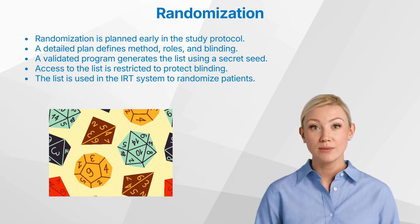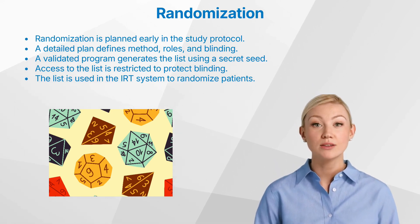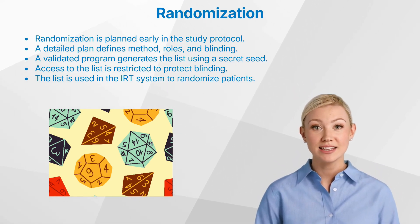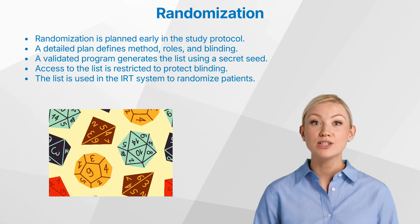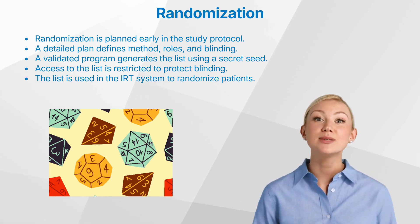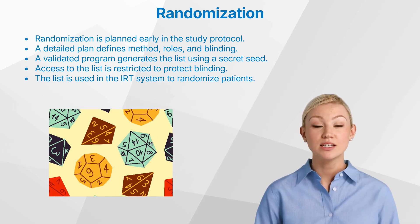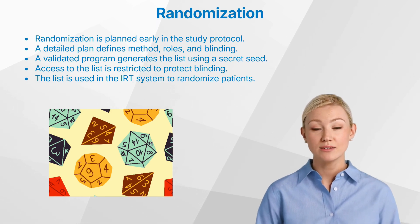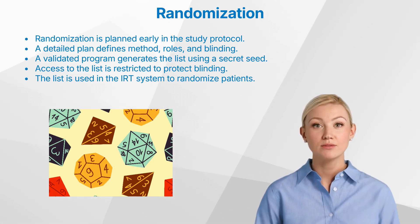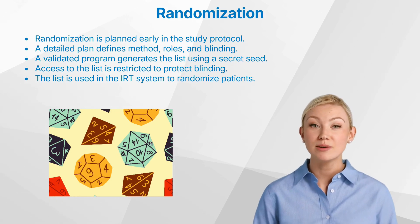Everyone else — project managers, site staff, monitors — should not see the list, to preserve the integrity of the study. Once created and validated, the list is securely uploaded into the IRT system (interactive response technology system), where patient randomization will be carried out. Only after this can the first patient be randomized.